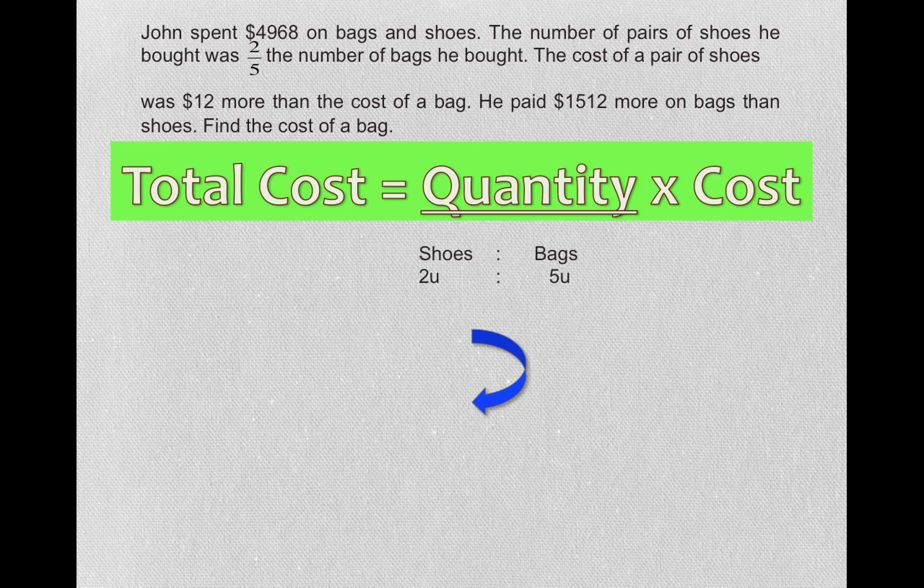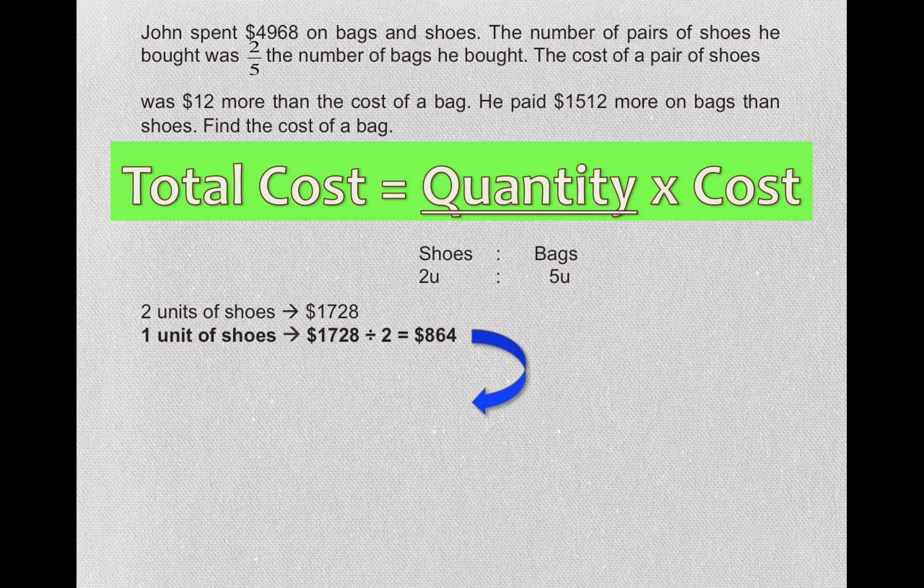Here we were told that shoes and bags, if shoes were two units, bags must be five units because it's two-fifths the number of bags. We have found out earlier on, two units of shoes is $1,728. So what is one unit of shoes? You divide by two and get $864.